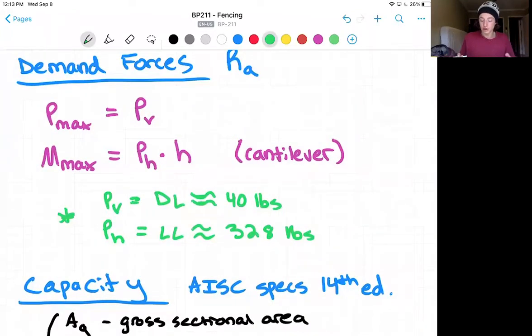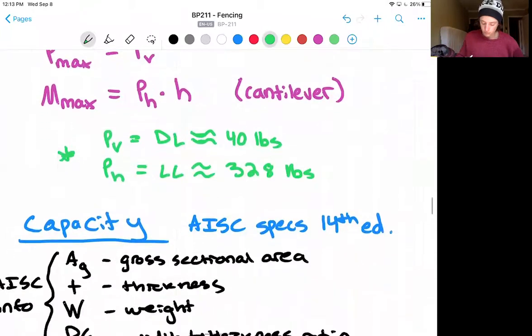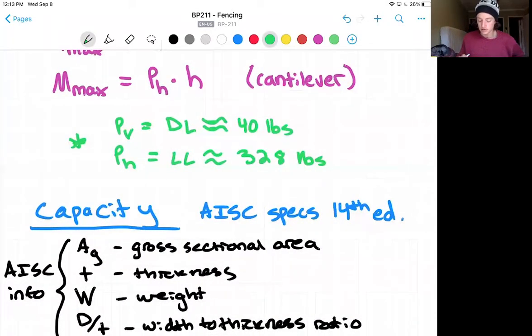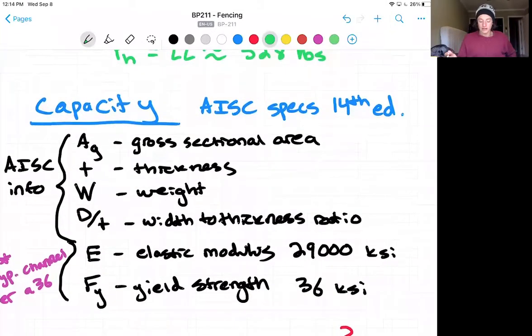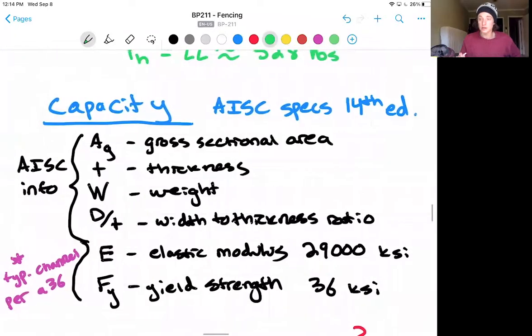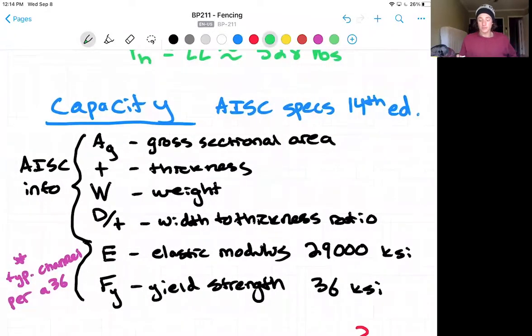Now that we have our demand, we're going to want to calculate our capacity of the section, and we will use the AISC specifications 14th edition that is linked in the textbook section of this course for finding the capacity of the section, as well as how to check the section. So what we're going to need to find first from the AISC is information specific to an HSS channel, and specifically the channel size we are using.